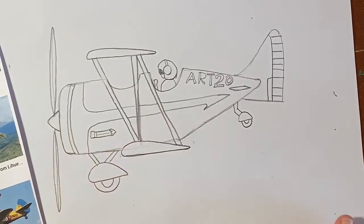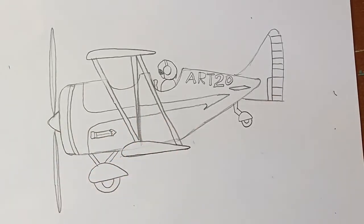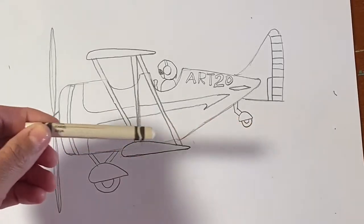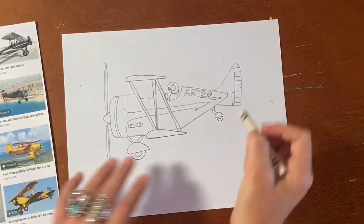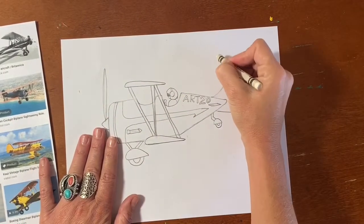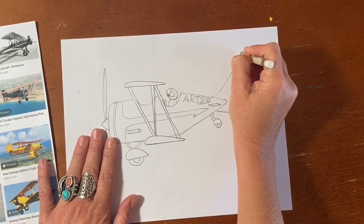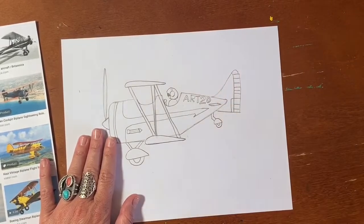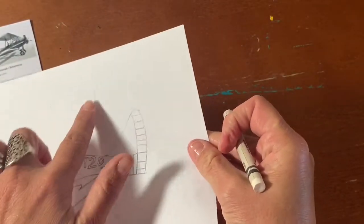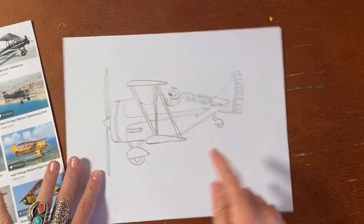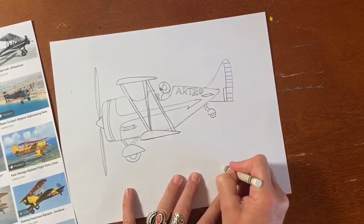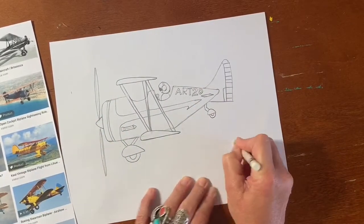After you have your airplane drawn, you're going to grab your white crayon and start making clouds. Now I did not end up coloring my clouds in. I probably should have. I just did the outline of them. Make sure you put some overlapping your airplane so it looks like your airplane is flying through the clouds. You can kind of see where I drew it, but I recommend filling it in with crayon. It doesn't have to be all the way, just enough to show clouds.